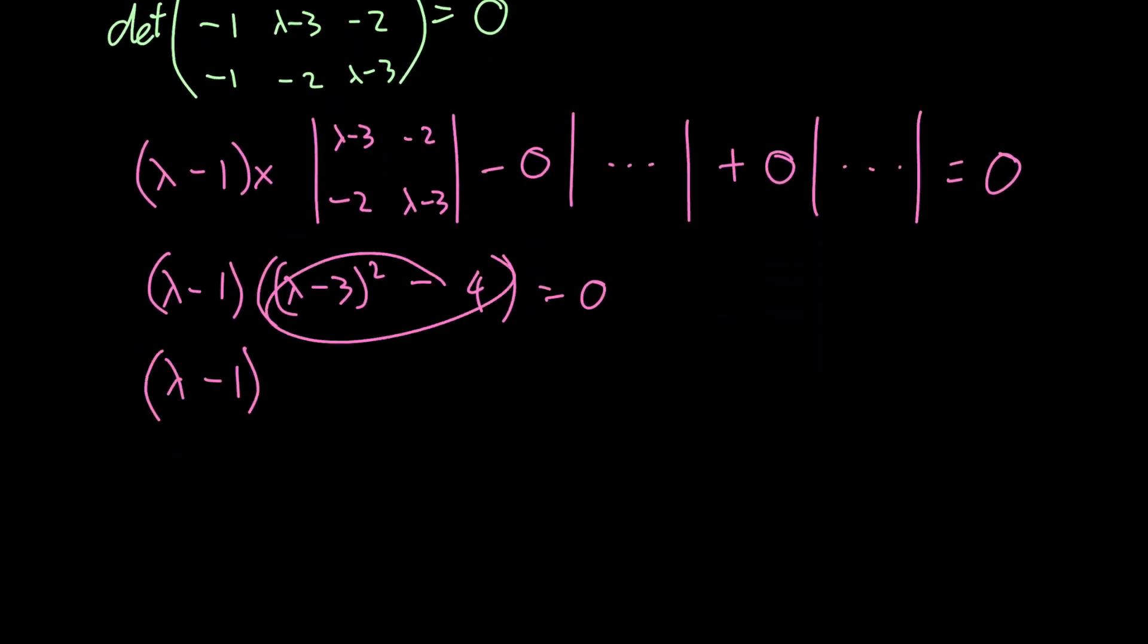Let's expand this right-hand bracket. We have lambda squared minus 6 lambda plus 9 minus 4 equals 0. But 9 minus 4 we know is just plus 5. Now let's see if we can factorize this.